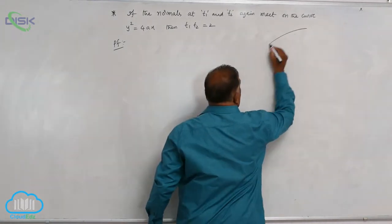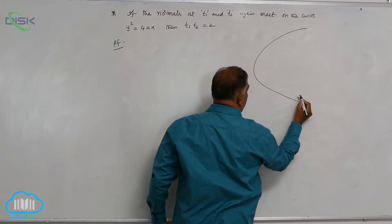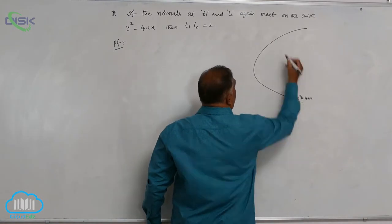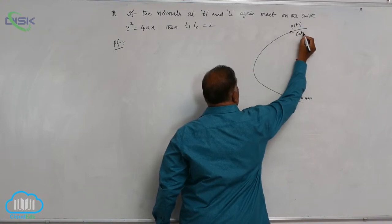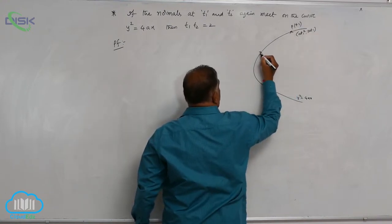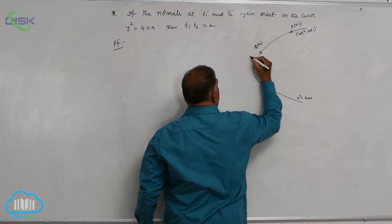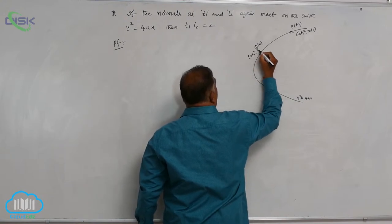Let us draw the diagram. This is y² = 4ax. Assume that this is P(t1), which is at1², 2at1. This is Q(t2), which is at2², 2at2.